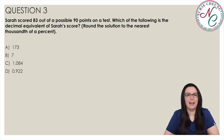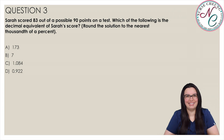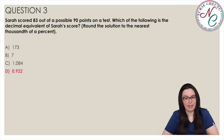Sarah scored 83 out of a possible 90 points on a test. Which of the following is the decimal equivalent to Sarah's score? Round the solution to the nearest thousandth. Is it A, 173; B, 7; C, 1.084; or D, 0.922? The correct answer is D, 0.922. We write Sarah's score as a fraction: 83 points out of 90 is 83 over 90. We divide the numerator by the denominator — 83 divided by 90 equals approximately 0.922.